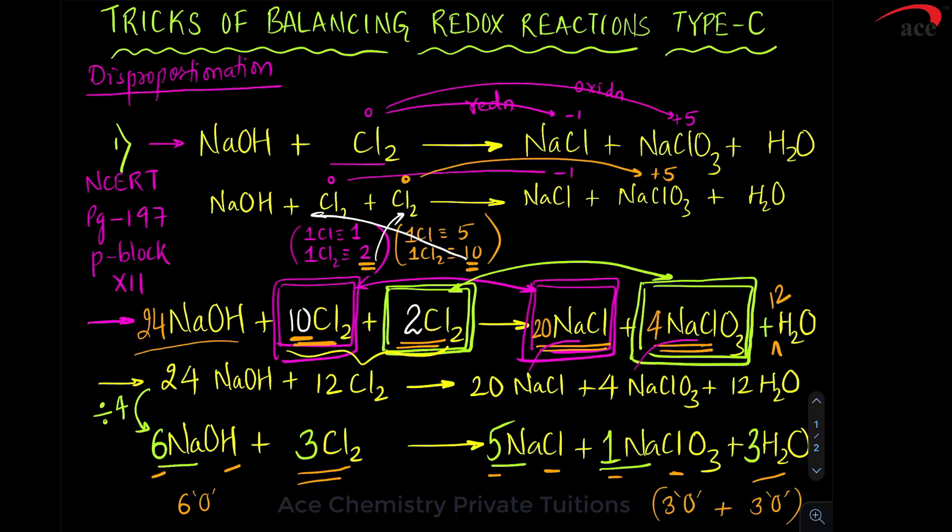Disproportionation reaction. The trick is the element or the substance which undergoes disproportionation, you have to write down twice and then use the same logic of type A and you will get the answer.